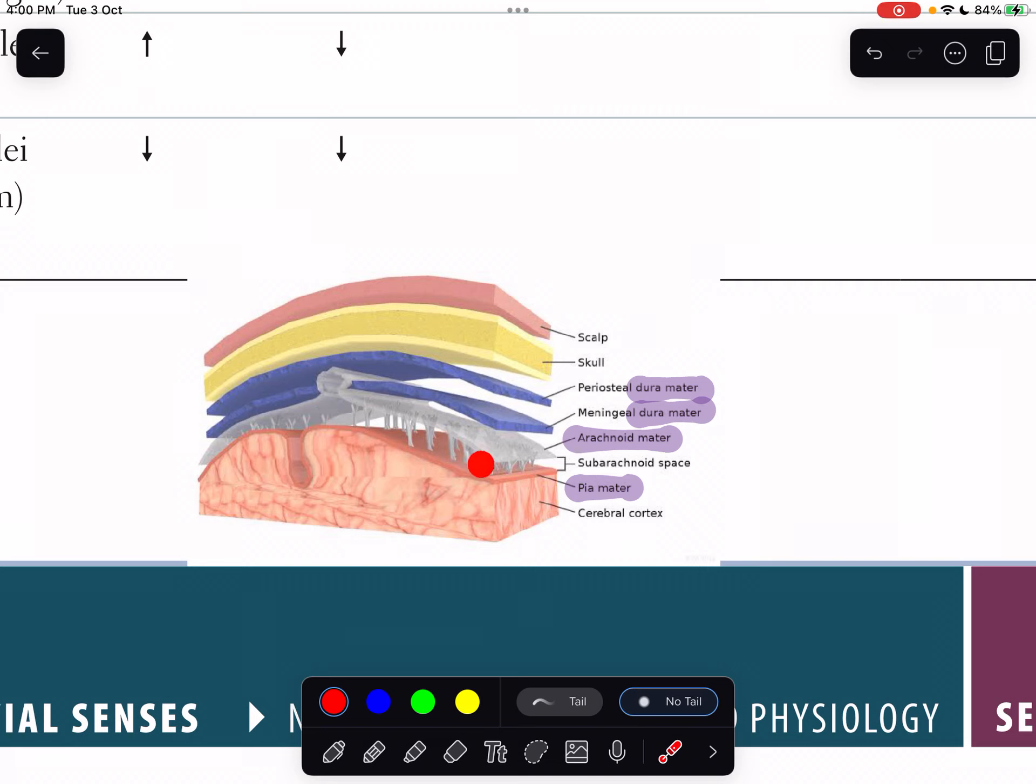This is pia matter, which is adhered to the brain or cerebral cortex. The spaces between them are known as spaces - for example, the space between dura matter is known as subdural space, then arachnoid space.